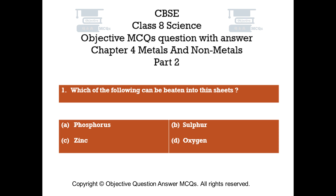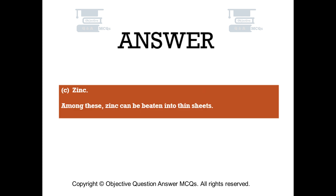Question number 1: Which of the following can be beaten into thin sheets? Option A: Phosphorus. Option B: Sulfur. Option C: Zinc. Option D: Oxygen. The right answer is Option C — Zinc. Among these, zinc can be beaten into thin sheets.